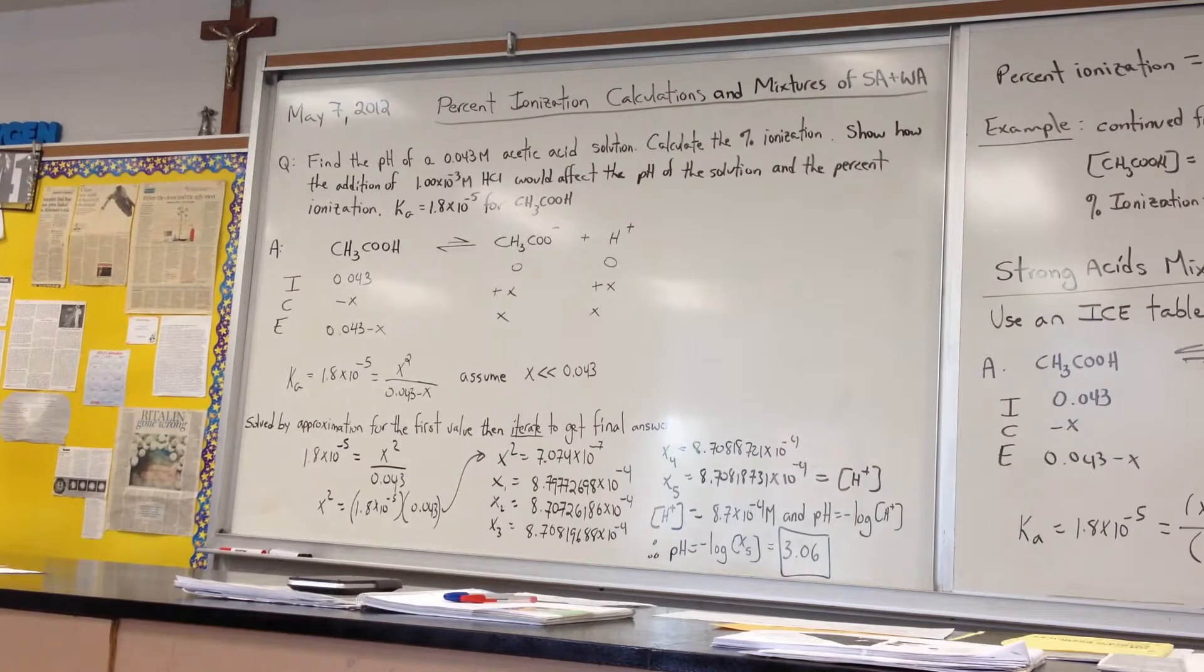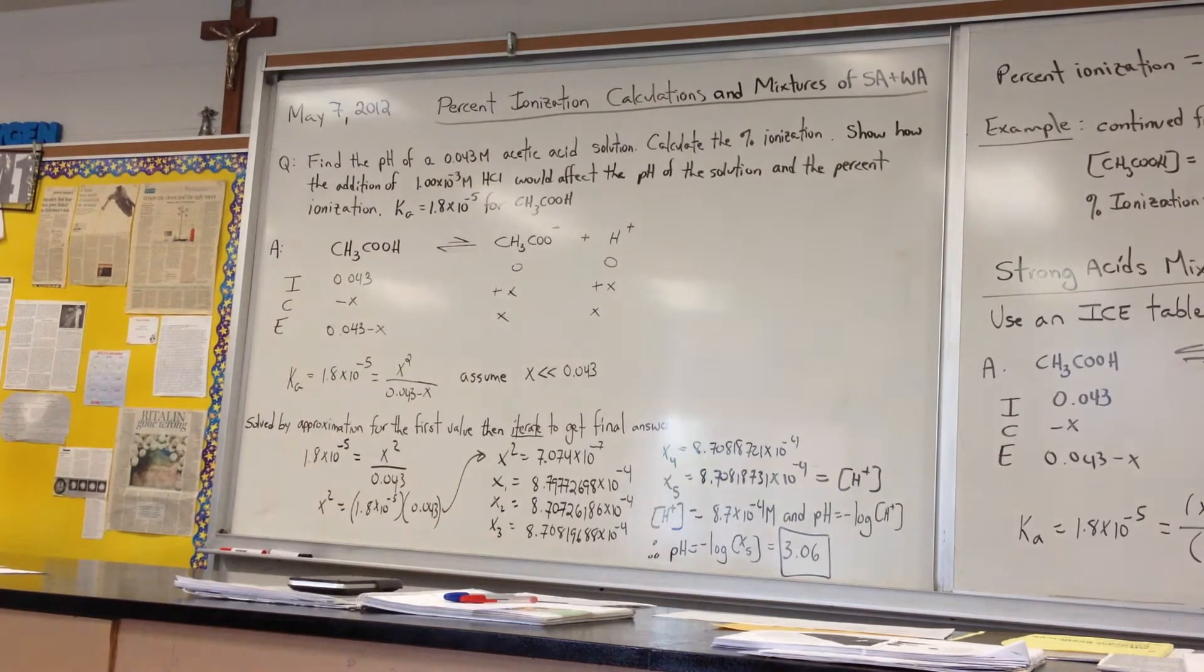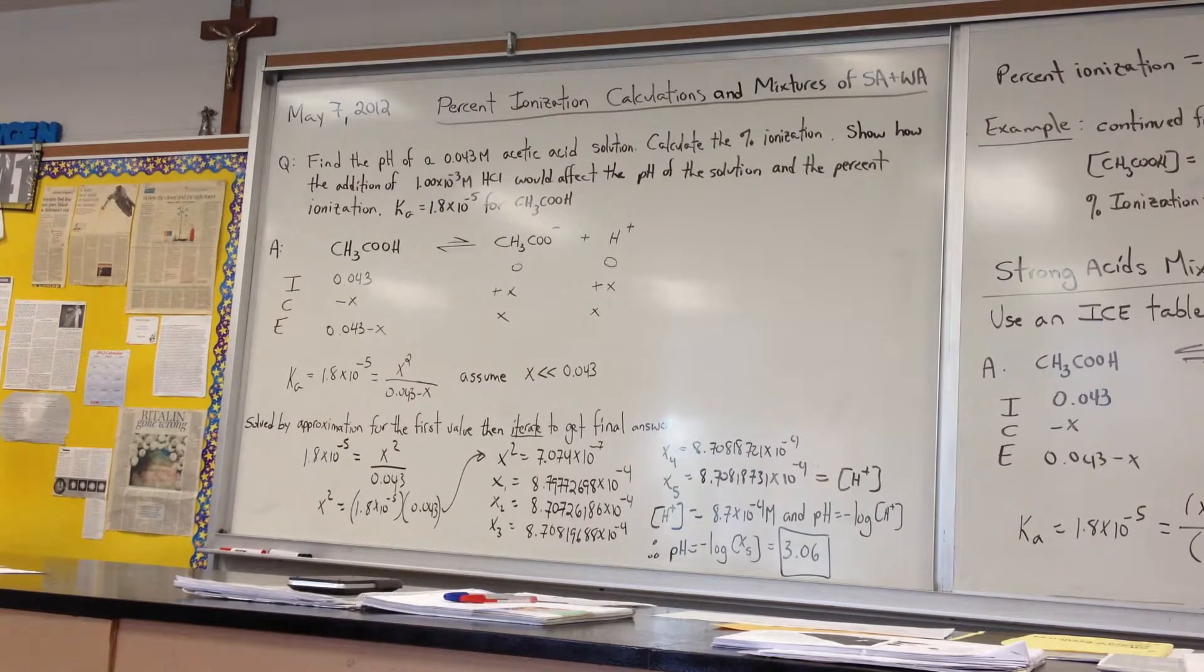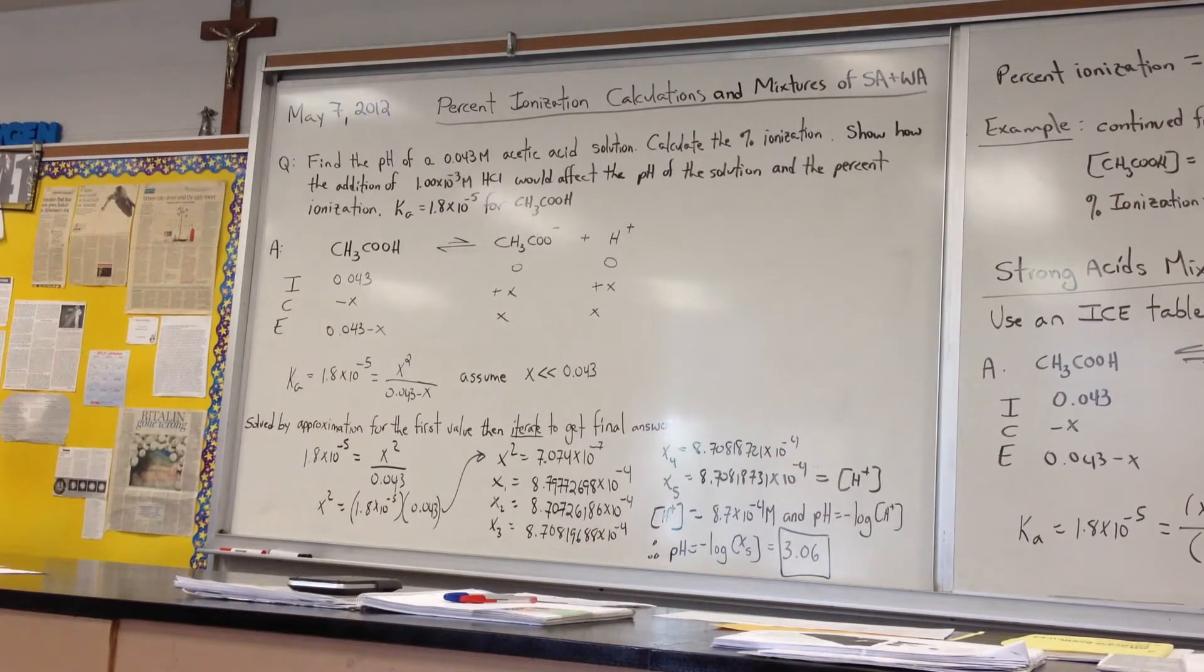Yesterday's homework question was to find the pH of a 0.043 molar acetic acid solution, a weak acid, and then calculate the percent ionization. Show how the addition of 1.0×10⁻³ molar HCl, a strong acid, would affect the pH of the solution and the percent ionization.